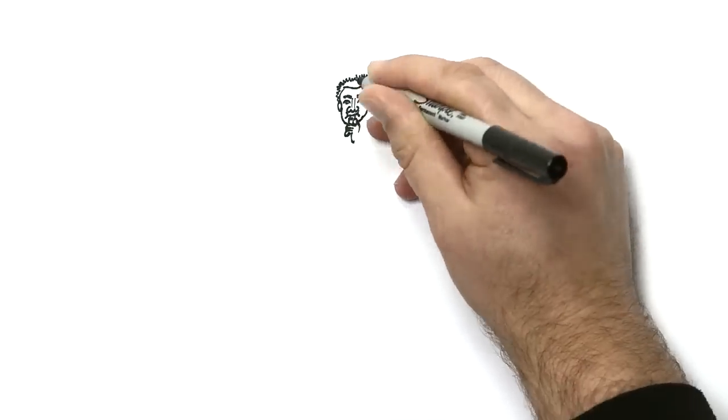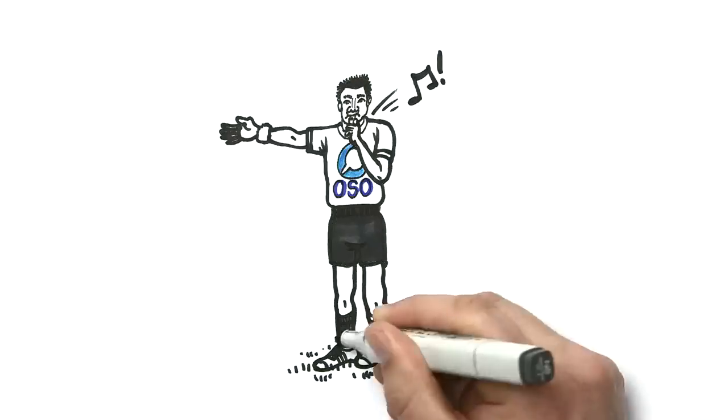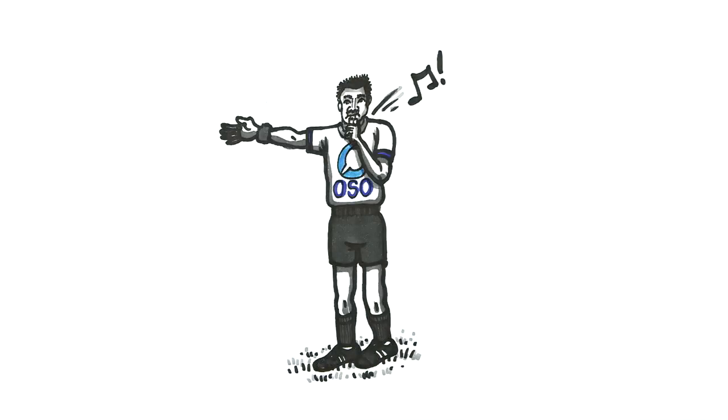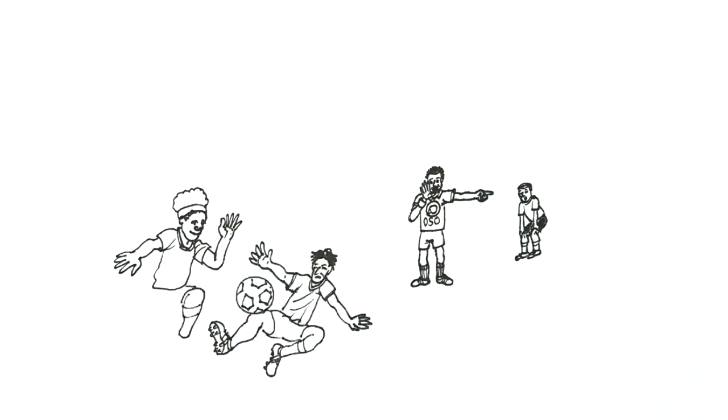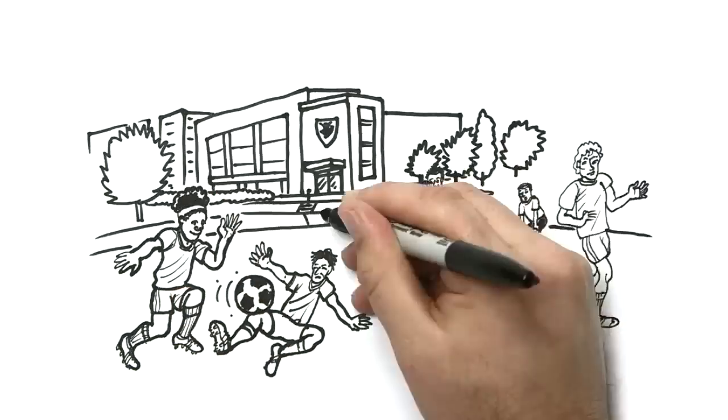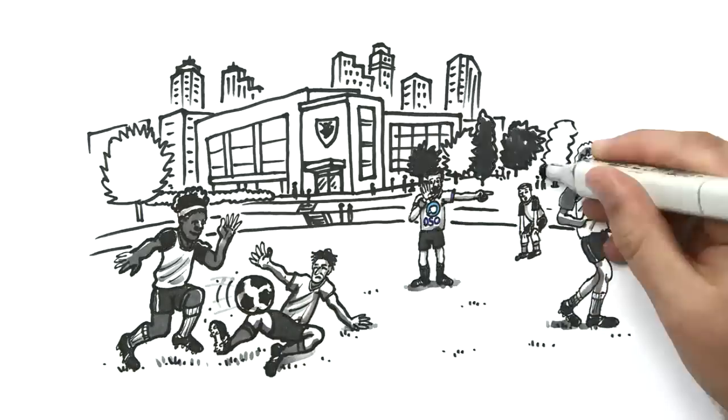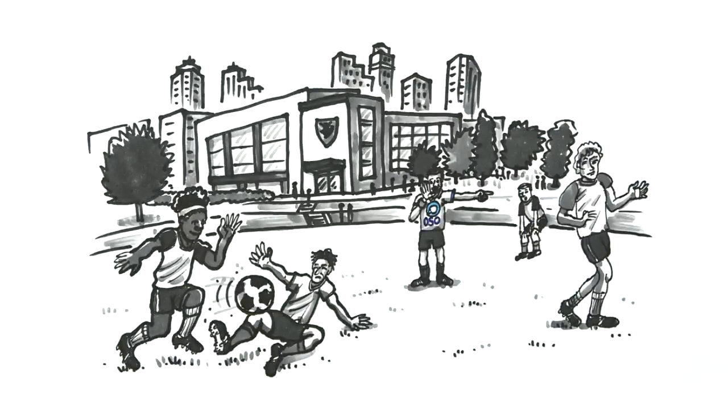The Overseas Students Ombudsman is sort of like an umpire. They know all the rules and how to work out if you've been treated fairly. So if you're not happy with how your private education provider has handled your complaint, the OSO is the next step. Their job is to help make sure that everyone is doing the right thing.